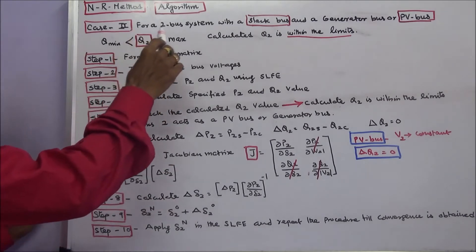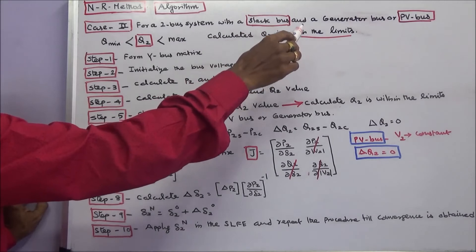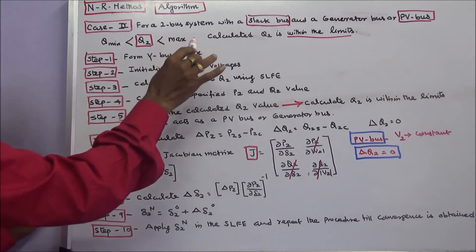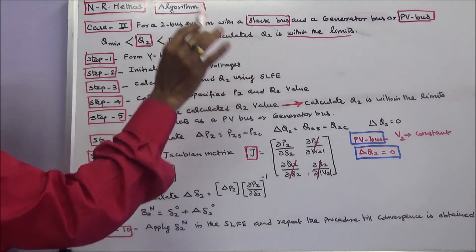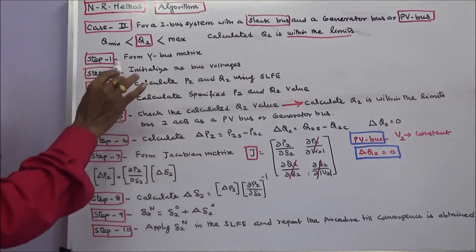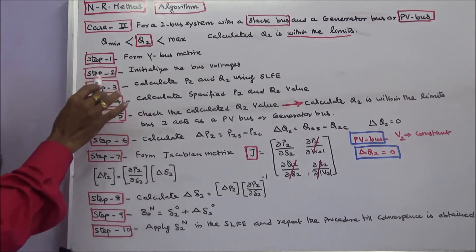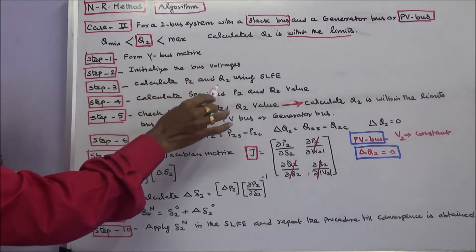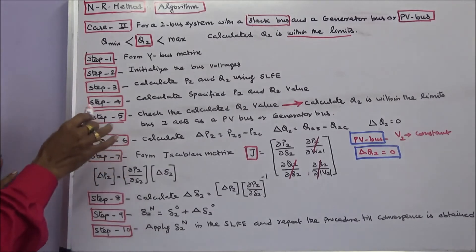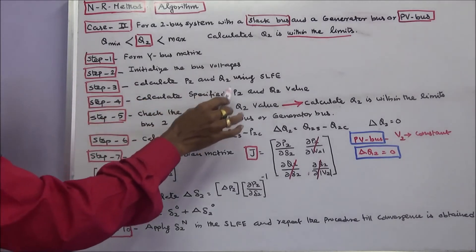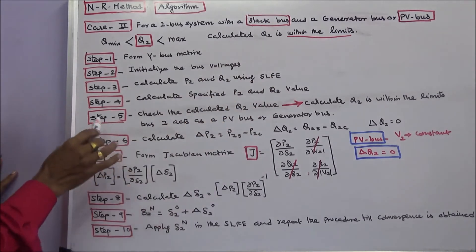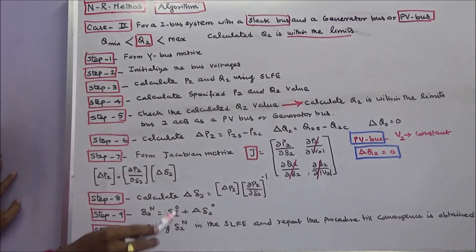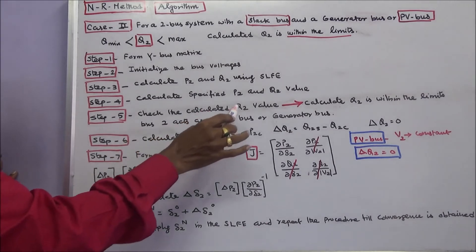Case 2: for a 2-bus system with a slack bus and a generator bus, or a PV bus. Here the reactive power limit is given. Case 2A: if the calculated reactive power is within the limits — Step 1: form the Y-bus matrix. Step 2: initialize the bus voltages. Step 3: calculate real power and reactive power using the static load flow equations. Step 4: calculate the specified real power and reactive power values. Step 5: check the calculated Q2 value. If calculated Q2 is within the limits, bus 2 acts as a PV bus or generator bus.